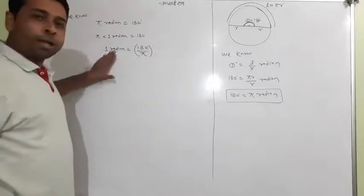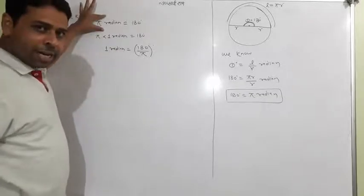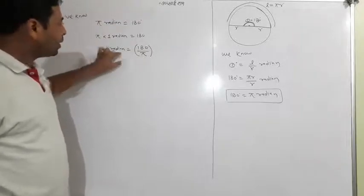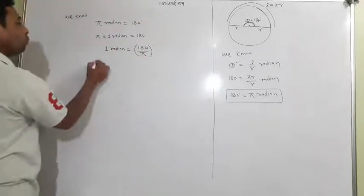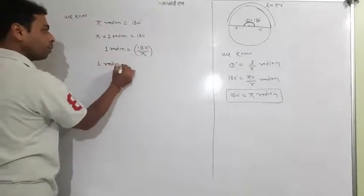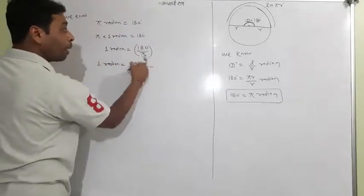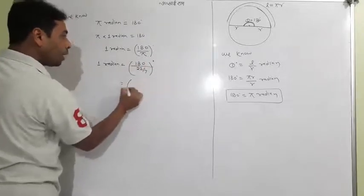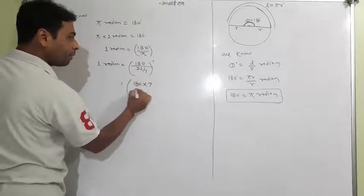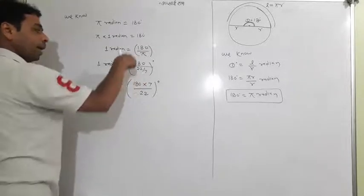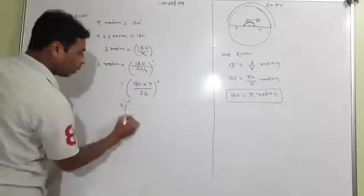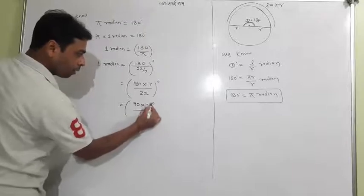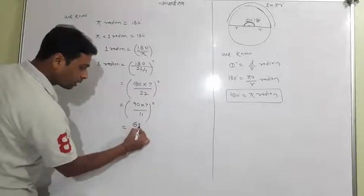Now I want to find the actual value of 1 radian. One radian equals 180/π, and π is 22/7, so this equals 180 × 7/22 degrees. Simplifying: cancel by 2 gives 630/11 degrees.